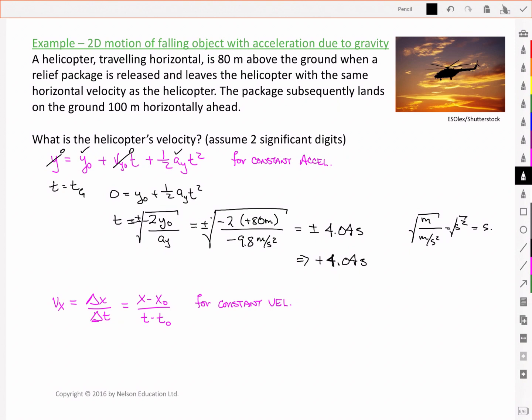Lastly then, we want to use that time in order to solve for the x component of the velocity, which was our initial velocity, which was also then the velocity of the helicopter as it moved horizontally. And so I've got my x position, which is 100 meters, minus x-naught, which was 0, t is 4.04 seconds, and t-naught is 0. And so I end up with a value that is a positive 24.748 meters per second. In other words, to two significant digits, 25 meters per second.